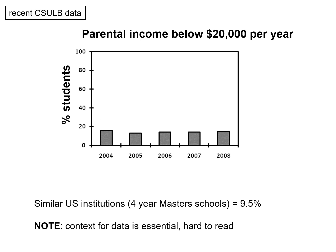Here's data for parental income below $20,000 a year across the same years — the values here are a little bit lower. Our context is 9.5 percent, and again that context is essential because these numbers are similar to the previous ones, but we can actually see that they're closer to the average for universities like this.